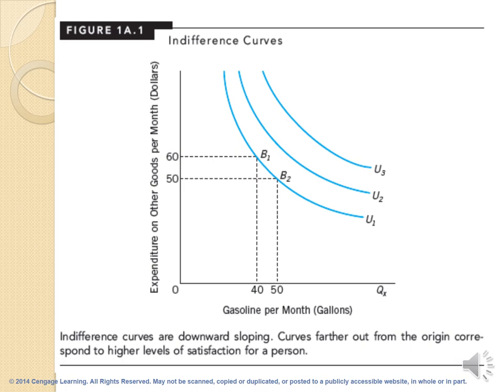As we have more of a good, our marginal utility decreases — we know this by the law of diminishing marginal utility. So we pay less money to obtain more units from the same goods or commodities.